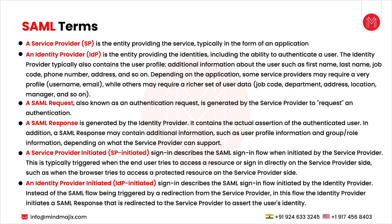The identity provider and service provider create a trust between them. They are two different entities that need to trust each other. Until they don't trust each other, there is no point of single sign-on, because if the identity provider doesn't trust the service provider and vice versa, there cannot be any exchange of metadata or information. Once trust is created, the service provider tells the identity provider what information is needed for an authenticated user, and the identity provider provides that information — it becomes a two-way communication.